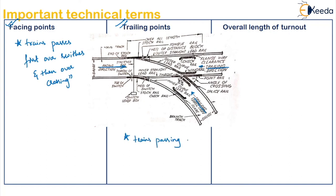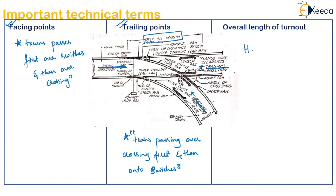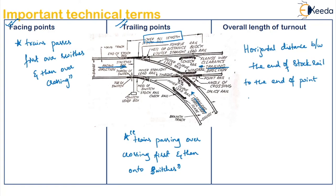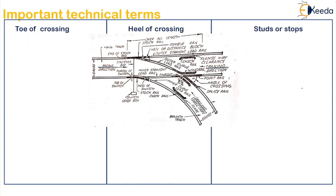Trains passing over crossing first and then onto switches are called trailing points. Then the overall length of the turnout: the horizontal distance between the end of the stock rail or main rail to the end of the point rail of the turnout. Next is the toe of crossing — the end point of the wing rail is called the toe of crossing.